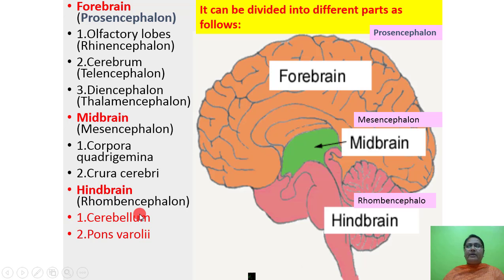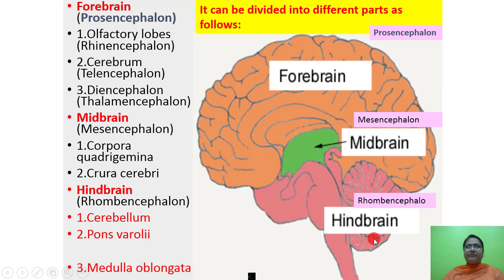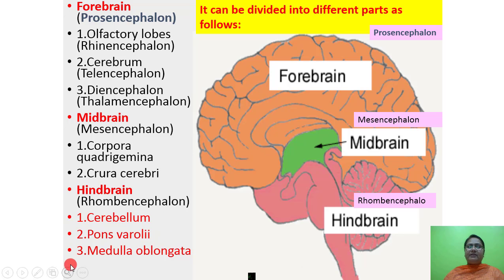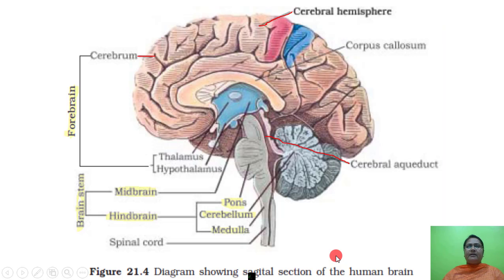The hindbrain also contains medulla oblongata as its third component. Here in the figure you can see all the parts clearly: forebrain, midbrain and hindbrain. In the forebrain there is the cerebrum, thalamus, and hypothalamus. Medulla oblongata is visible here, continuing into the spinal cord.